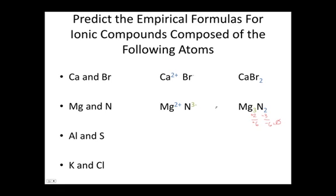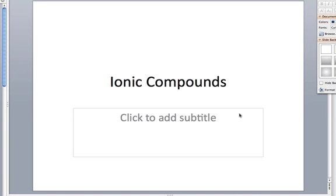Aluminum forms ions with a charge of plus three, and sulfur forms ions with a charge of minus two. So the empirical formula for aluminum sulfide is Al2S3. And potassium forms ions with a charge of plus one, while chlorine forms ions with a charge of minus one. So the formula for potassium chloride is KCl. Thanks for watching, we hope you enjoyed this chemistry solutions tutorial.